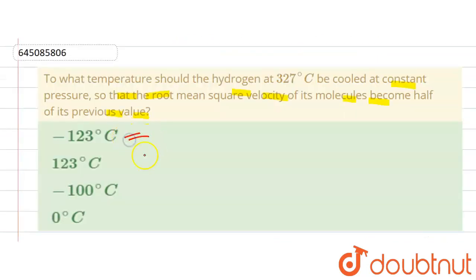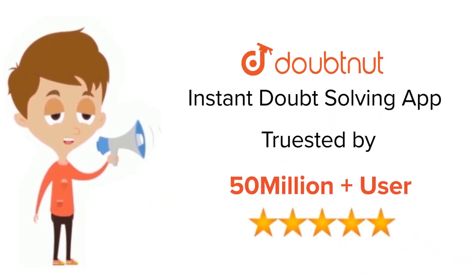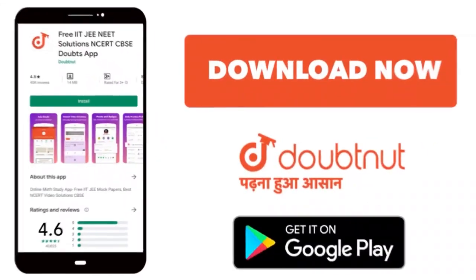That means first option is the right answer. To receive solutions to your questions, thank you. For class 6 to 12th, IIT-JEE and NEET level, trusted by more than 5 crore students, download Doubtnet app today.